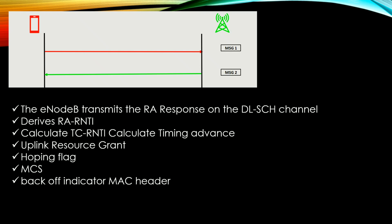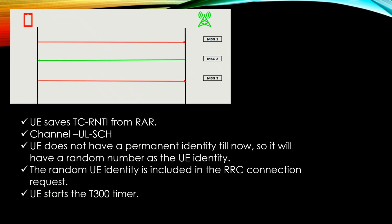Message 2 - RAR (Random Access Response): the eNodeB transmits the RAR on the downlink shared channel. The UE derives the RAR-RNTI, calculates the timing advance (TA), and an uplink resource grant is provided. MCS information is included. We will also get information about which power the UE should use for PUSCH and the uplink delay.